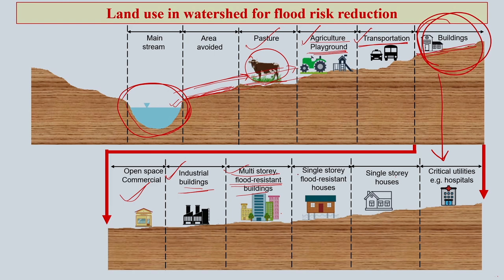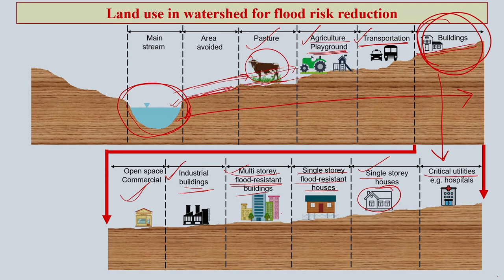A little bit more inside you can have single-story flood-resistant houses, then single-story houses, because this area is farther from the mainstream and chances of flood water intrusion are relatively less. Finally, you have critical utilities like hospitals, which must be far away from any chances of flood water intrusion. This is how you choose land use and place it to reduce risk from flood.